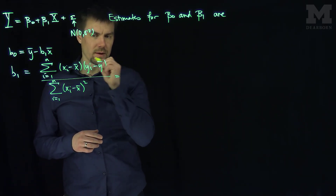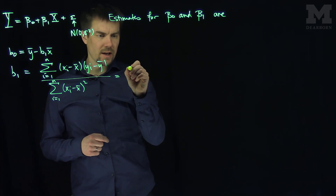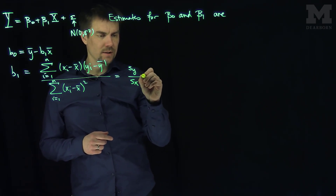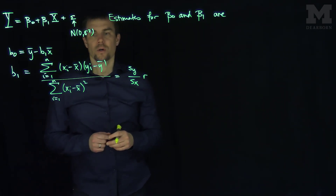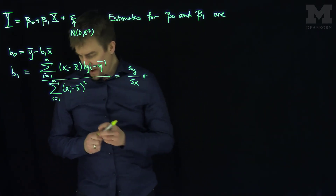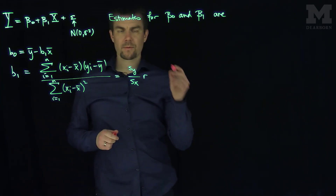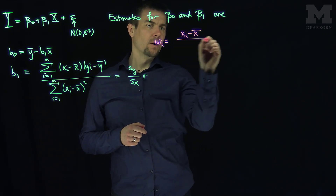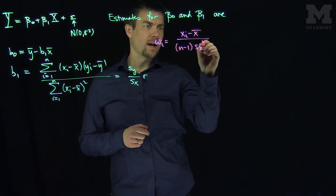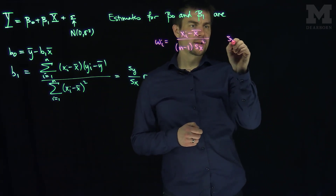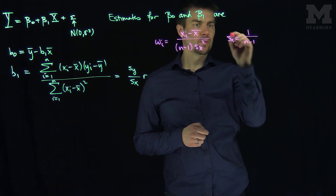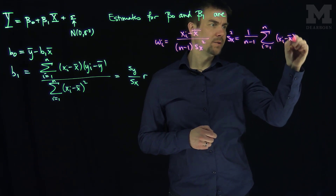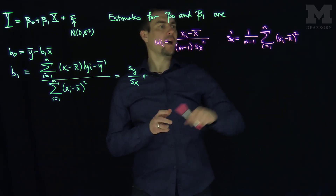We can write b1 in a nice way — as sᵧ over sₓ times the Pearson correlation. We can also use weights by defining wᵢ equals (xᵢ minus x-bar) over (n minus 1) sₓ squared. Recall that sₓ squared is 1 over (n minus 1) times the sum from i equals 1 to n of (xᵢ minus x-bar) squared, and similarly for sᵧ squared.